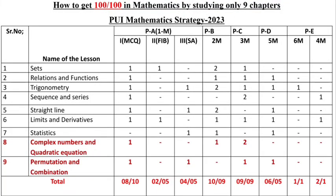So, as of now, let's discuss the mathematics strategy. These are the nine chapters you are going to do: sets, relations and functions, trigonometry, sequence and series, straight line, limits and derivatives, statistics, complex numbers and quadratic equations, permutation and combination.